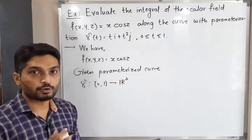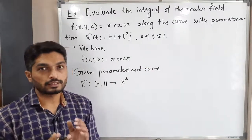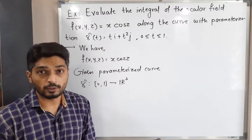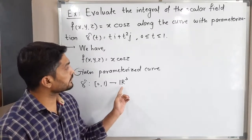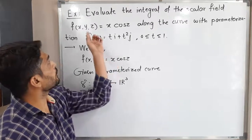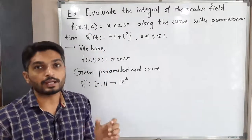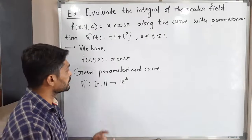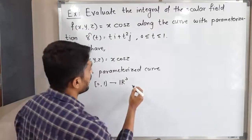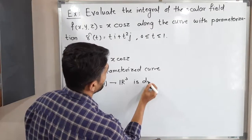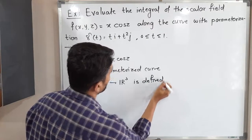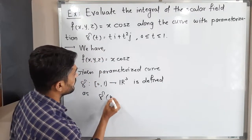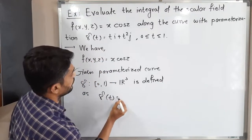The codomain is ℝ³ since the domain of the function f is (x, y, z), meaning ℝ³. So gamma is defined from the closed interval [0, 1] to ℝ³, and γ(t) is equal to...